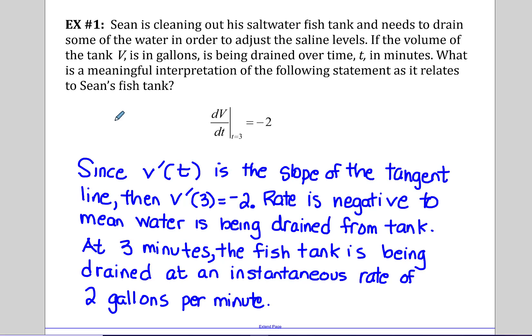Here in this example, I've already had it written out because I want you to see what's going on here. Sean is cleaning out his saltwater fish tank and he needs to drain some water in order to adjust the saline levels. If the volume of the tank is V and that's in gallons, and it's being drained over some time t in minutes, we want to interpret the meaning of this derivative: the derivative of the volume with respect to time when time is three, or such that time is three, is negative two.